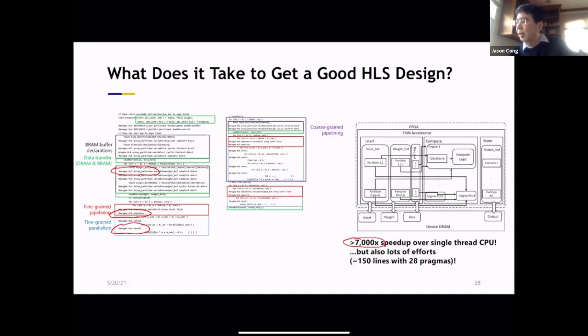So after a number of optimizations, now we are 7000x faster than a single-thread CPU. I just use single-thread CPU as a reference. Remember, early on, we were 80x slower. But now, except your 10, 20 lines of code become 150 lines of code with 28 pragmas.